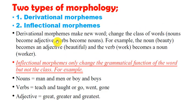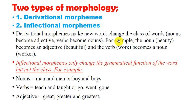There are two types of morphology: derivational morphology and inflectional morphology. Derivational morphemes make new words and change the class of words — nouns become adjectives, verbs become nouns. For example, the noun 'beauty' becomes the adjective 'beautiful,' and the verb 'work' becomes the noun 'worker.'